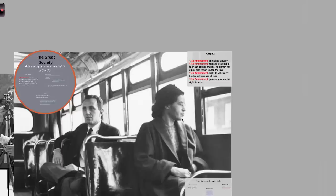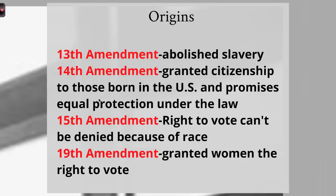Let's start with the origins of the civil rights movement. First, we had three amendments passed after the Civil War: the 13th, 14th, and 15th Amendments. The 13th abolishes slavery. The 14th grants citizenship to those born in the US, including all former slaves, and promises equal protection under the law. The 15th Amendment granted the right to vote for African Americans. Another amendment that helped with rights was granting women the right to vote.